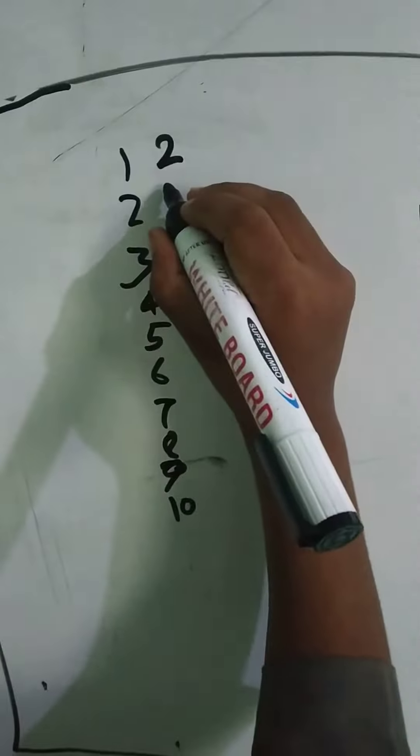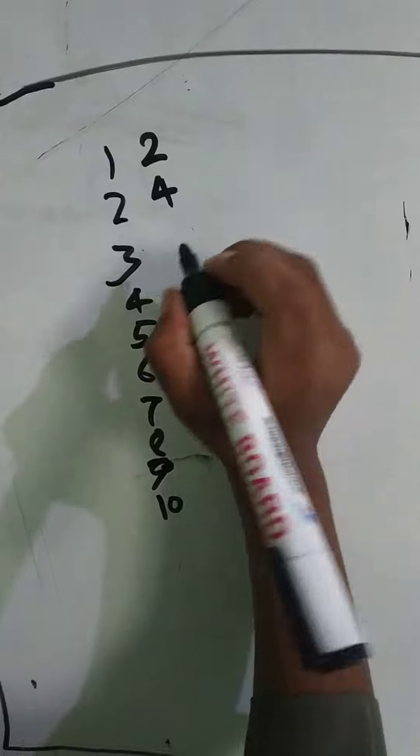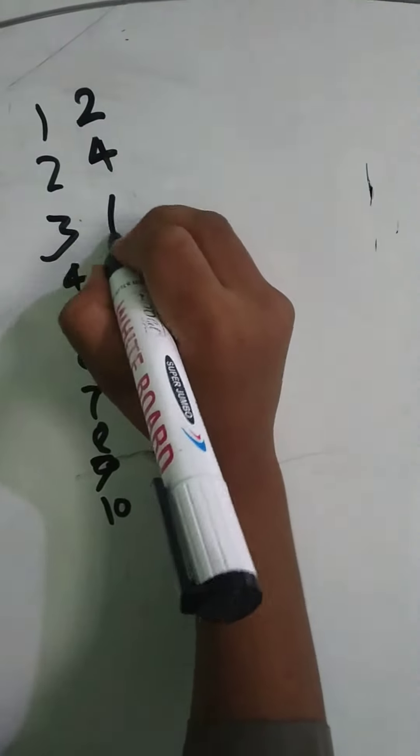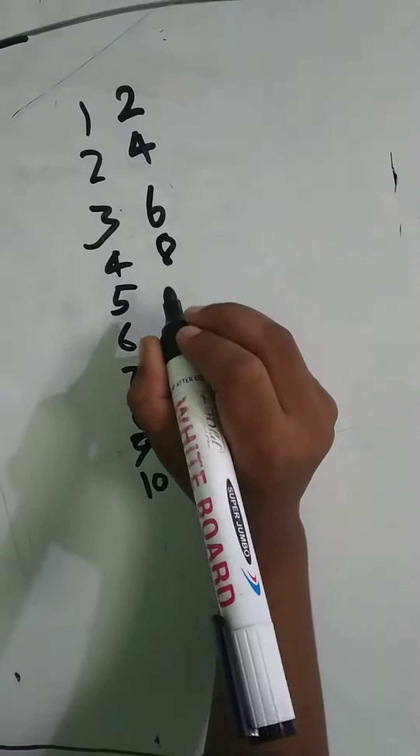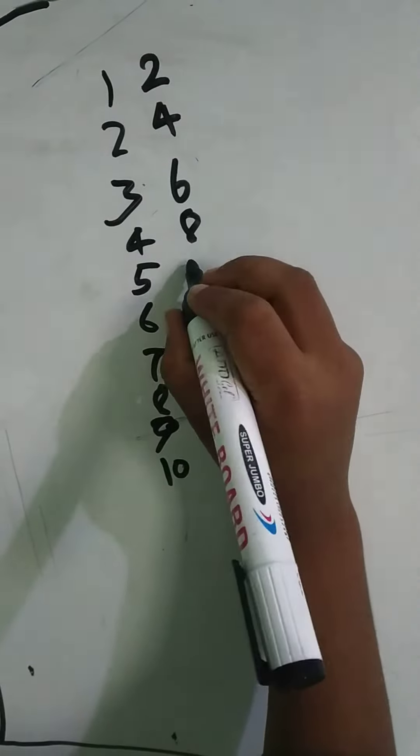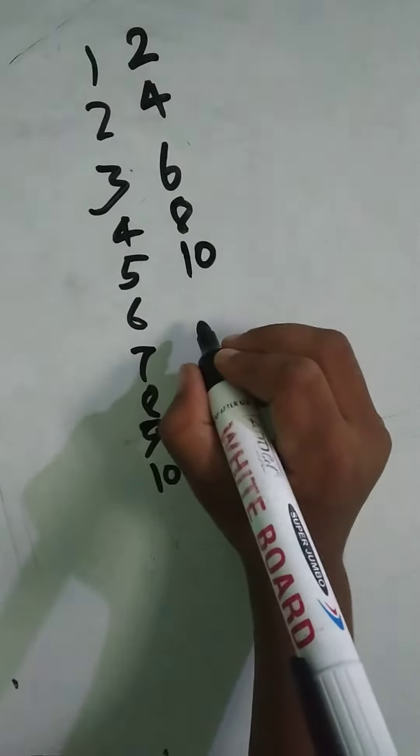2 times 1 equals 2, 2 times 2 equals 4, 2 times 3 equals 6, 2 times 4 equals 8, 2 times 5 equals 10, 2 times 6 equals 12.